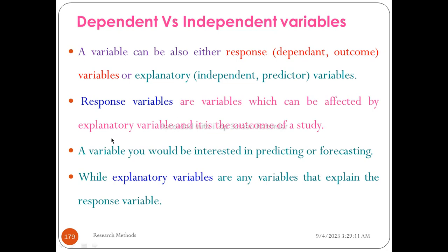The response variable is the variable you should be interested in predicting or forecasting. The response variable is what you predict, forecast, and are interested in. The explanatory variable is any variable that explains the response variable — it is the independent variable.